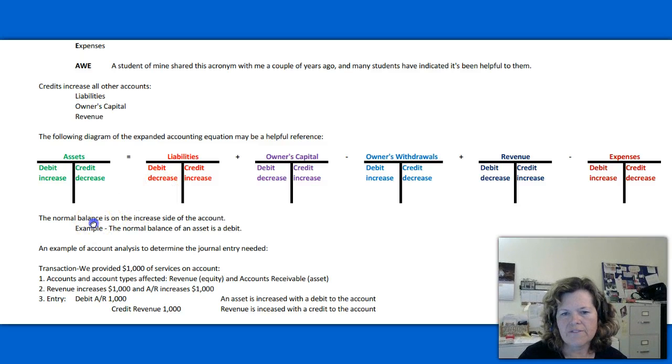Because that tells me that I might have an error somewhere I need to correct. So that's really all a normal balance is. If you can determine what type of account you've got and you know what increases the account and what decreases the account, figuring out the normal balance is very easy. Because it's really just the increased side of the account.